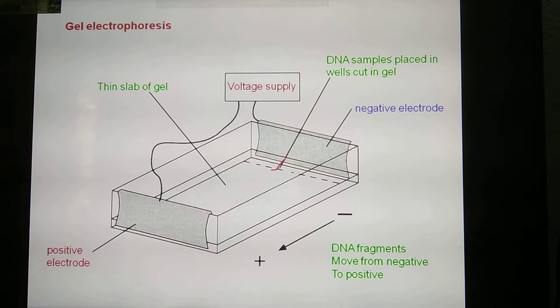The DNA sample is placed at the negative cathode. The opposite end is positive. DNA fragments run from negative to positive.